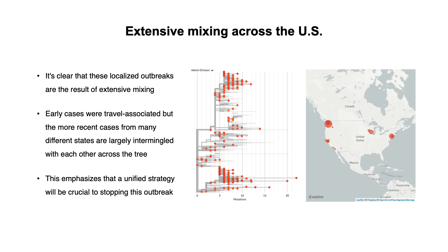For North America, we have updates for the US and Canada. As we gain a fuller picture of the outbreak in the US, it's clear that these localized outbreaks are the result of extensive mixing. While many of the early cases were travel-associated, the more recent cases from many different states are largely intermingled with each other across the tree. This emphasizes that a unified strategy will be crucial to stopping this outbreak.